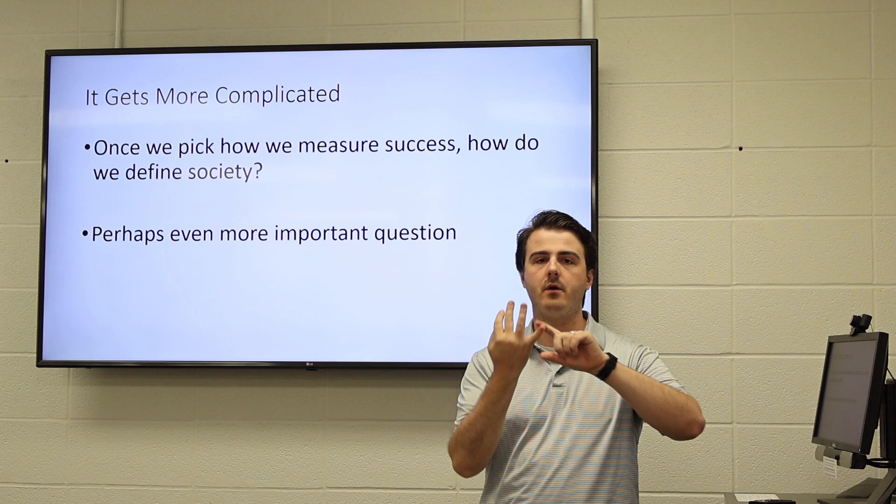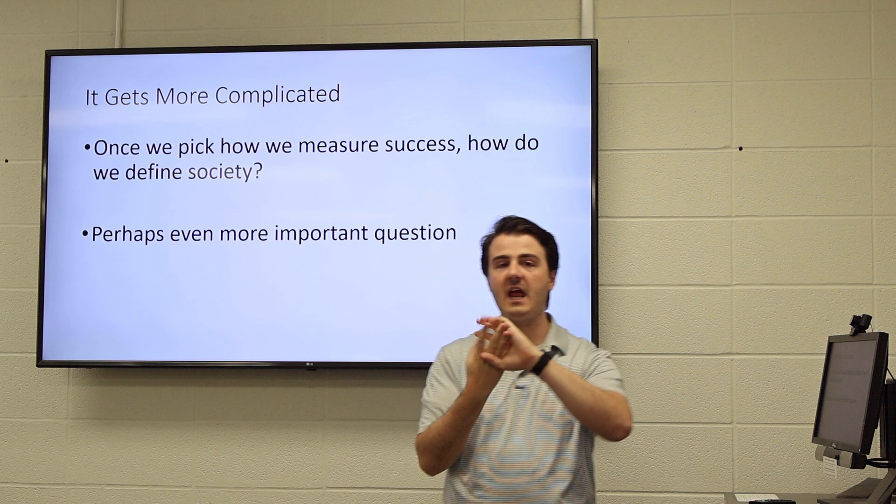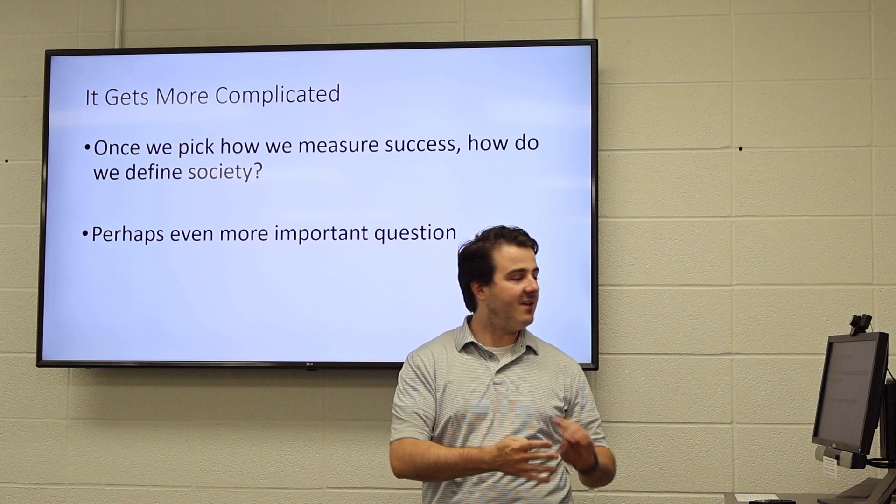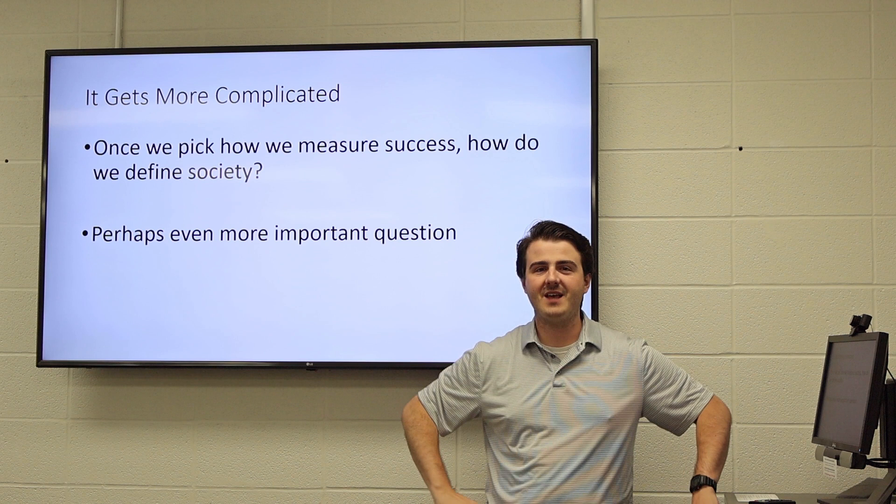To reiterate, we talked about utilitarian, Rawlsian, Amartya Sen's, and the UN's different ways of measuring successful societies — we call these social welfare functions. But the story doesn't end there. Even if we pick one of these, how are we defining society?